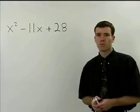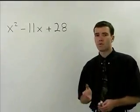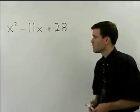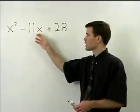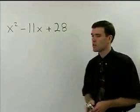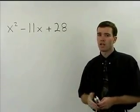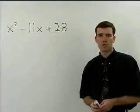The trinomial in this problem is in the same form as the one in the previous example. You've got an x squared term, an x term, and a constant term. So you can try to factor it in the same way as the product of two binomials.